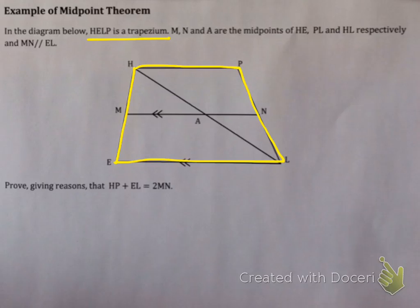Now what this means is that you've got M, N and A are all midpoints. Now if you have a look at this, this means that there's two triangles: triangle HEL and triangle HPL, and you've got midpoints, which means this probably has something to do with the midpoint theorem.